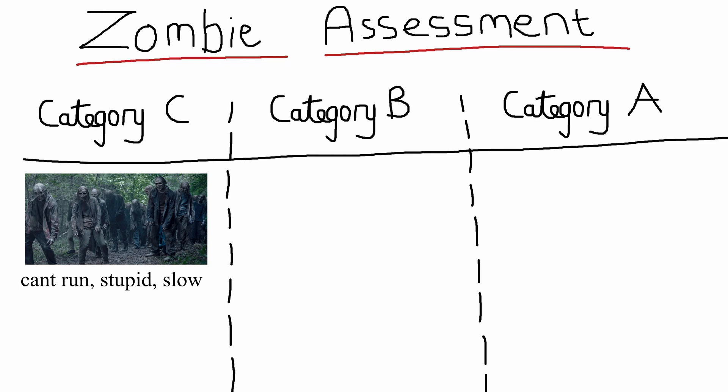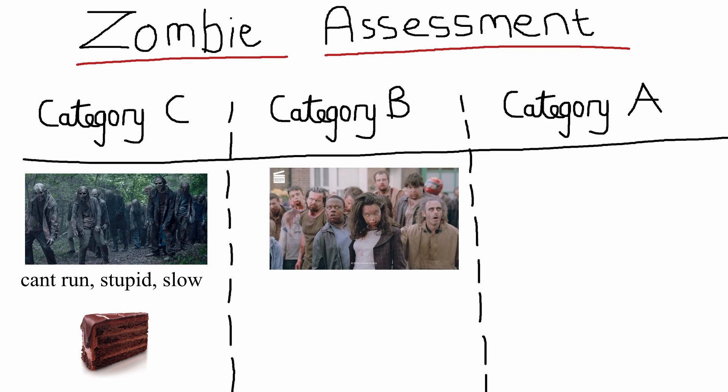Then in Category B we have the Shaun of the Dead type zombies. These zombies have a slightly higher average movement speed.